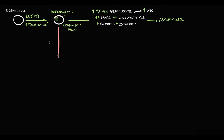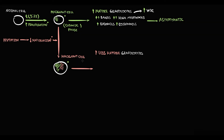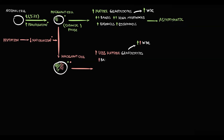Then a second mutation occurs, and this mutation disrupts cellular maturation. Because maturation becomes disrupted, this results in production of less mature granulocytes. Because of the first mutation, the proliferation rate remains very high, so the total amount of granulocytes and thereby white blood cells continues to increase with time. But because the second mutation causes a decrease in cellular maturation, the percentage of less mature cells increases.